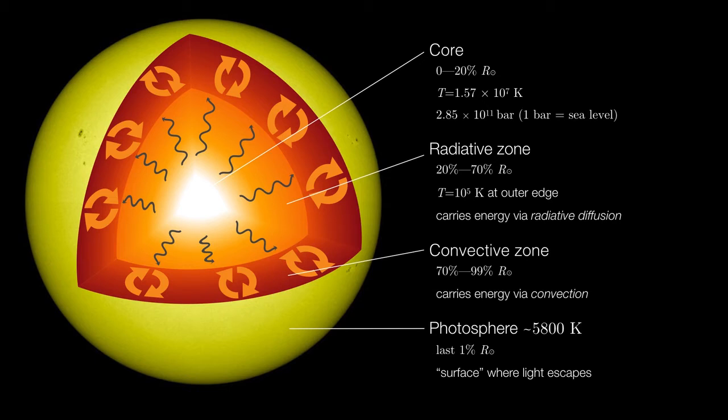The reason why we call this the surface is because this is where the Sun becomes opaque to light. In other words, we cannot peer through the photosphere and see into the layers underneath. We have to infer them using other techniques. But the major thing here is that this is where light is finally free to escape into space.